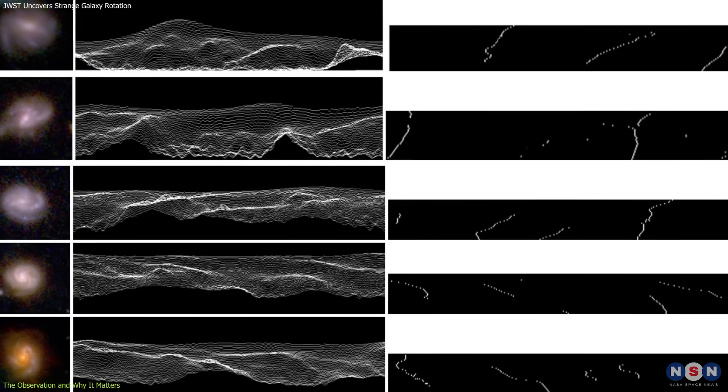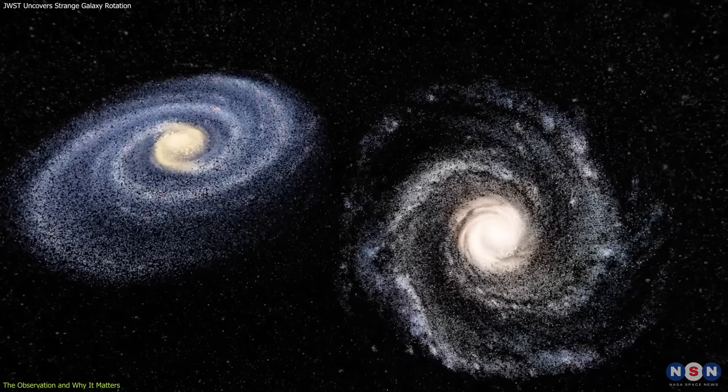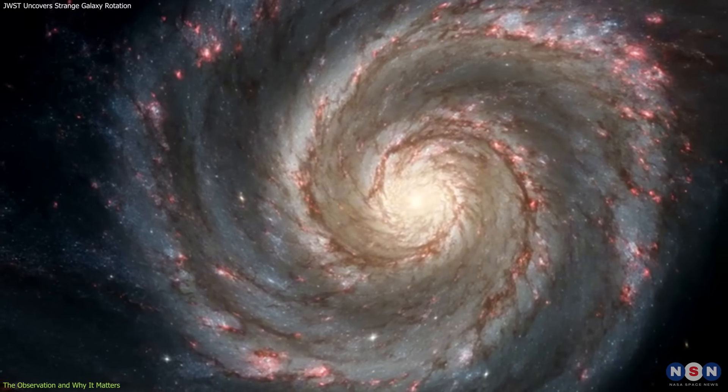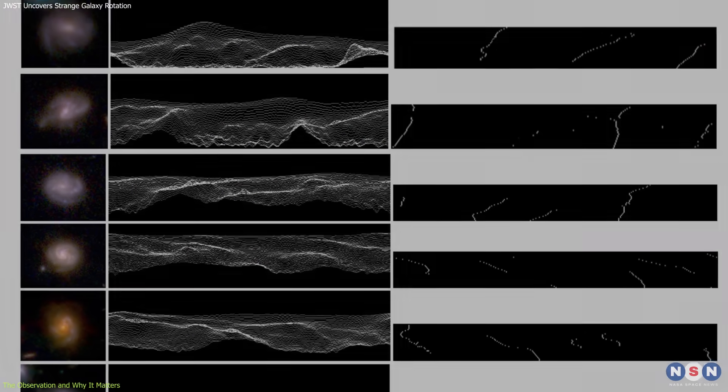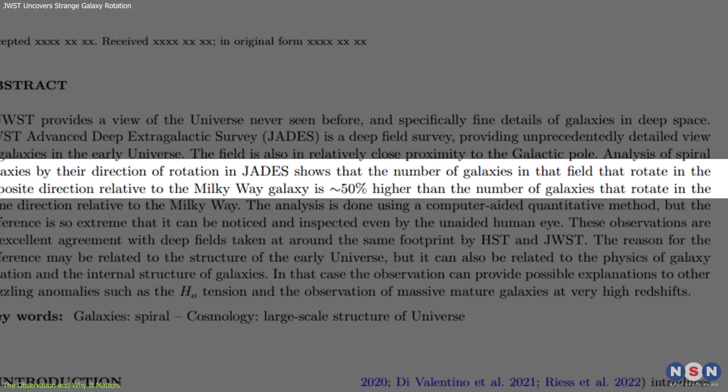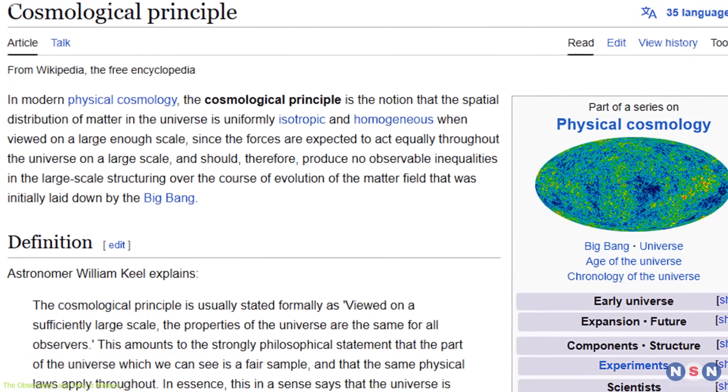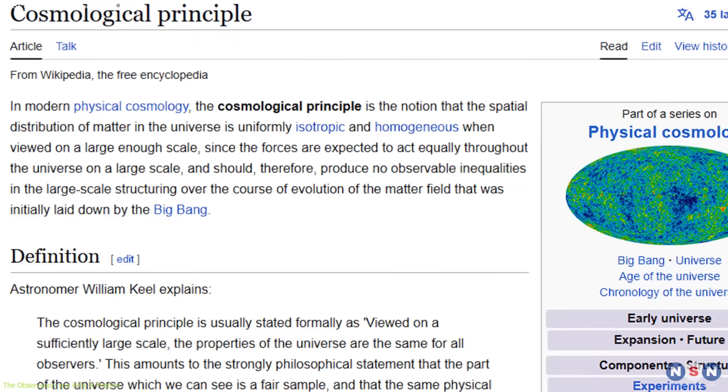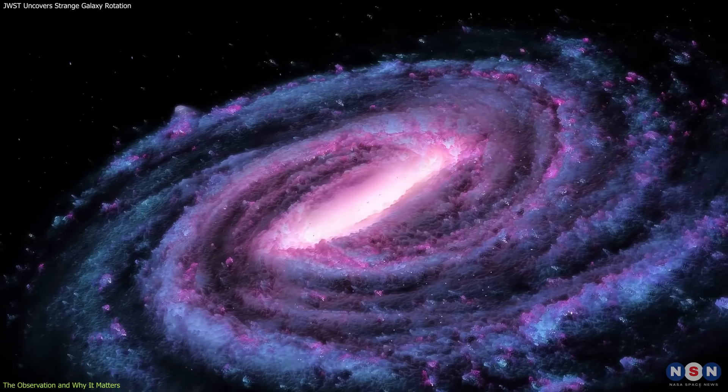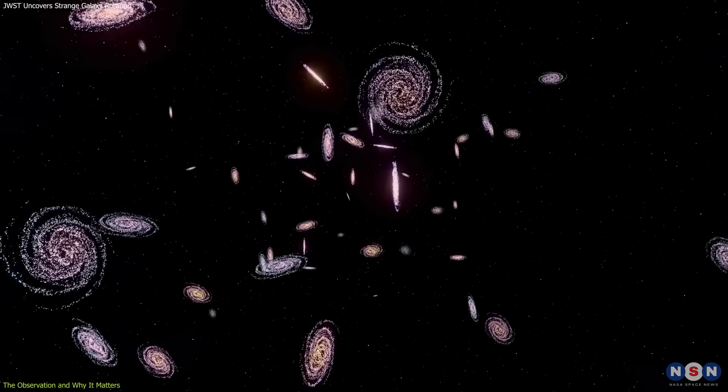By analyzing the orientation of light patterns from these galaxies, researchers determined whether each appeared to rotate clockwise or counterclockwise as seen from Earth. The results were striking. About 62% of the galaxies were rotating clockwise. Under normal cosmological assumptions, particularly the cosmological principle, which states that the universe is homogeneous and isotropic at large scales, there should be no preferred direction of rotation. That is, you'd expect roughly half of the galaxies to spin each way.